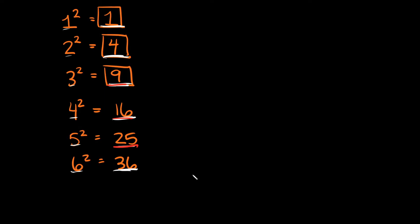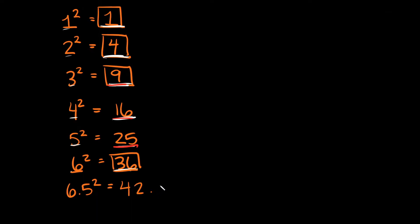Now that you know what a perfect square is, let me show you what isn't a perfect square. When you square a whole number, the answer you get is a perfect square. So what if I took 6.5 and squared that? Well, 6.5 squared is the same thing as 6.5 times 6.5, which if you plug into a calculator gives you 42.25. So is 6.5 a whole number? No — so that means 42.25 is not a perfect square.